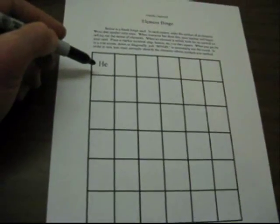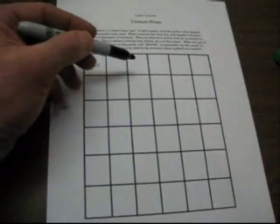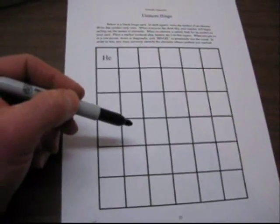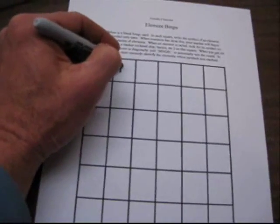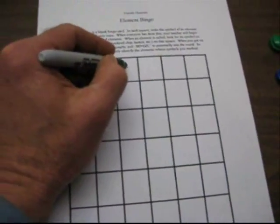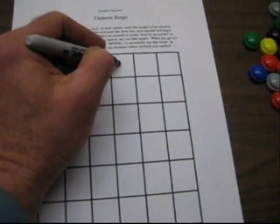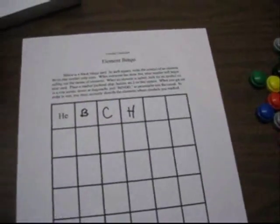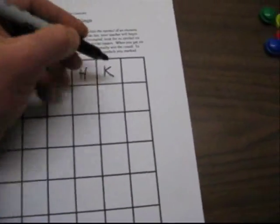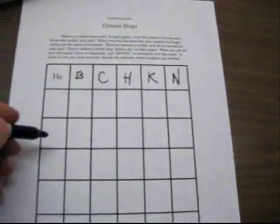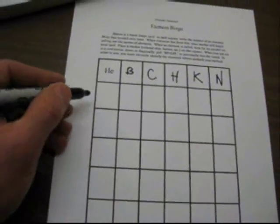So your students then, as the example here for helium is, can just randomly write the element symbols in the squares. So we may put a B for boron and then we'll have C for carbon and H for hydrogen. And you can have them use the periodic table in the book as they fill out their card.